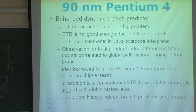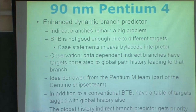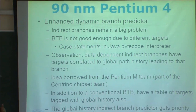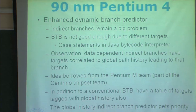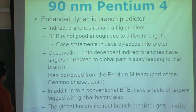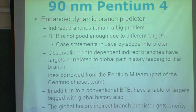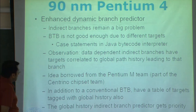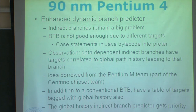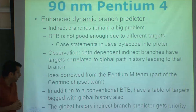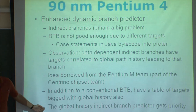Prescott also has a dynamic predictor for indirect branches. The observation was that data-dependent indirect branches have targets correlated with global path history linked to that branch. This idea was borrowed from the Pentium M team, which was part of the Centrino chipset. In addition to a conventional BTB, they maintained a table of targets tagged with global history. The global history branch predictor gets priority over the traditional BTB.